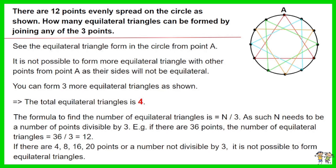For example, if there are 36 points, the number of equilateral triangles equals 36 ÷ 3 = 12. If there are 4, 8, 16, or 20 points — a number not divisible by 3 — it is not possible to form equilateral triangles.